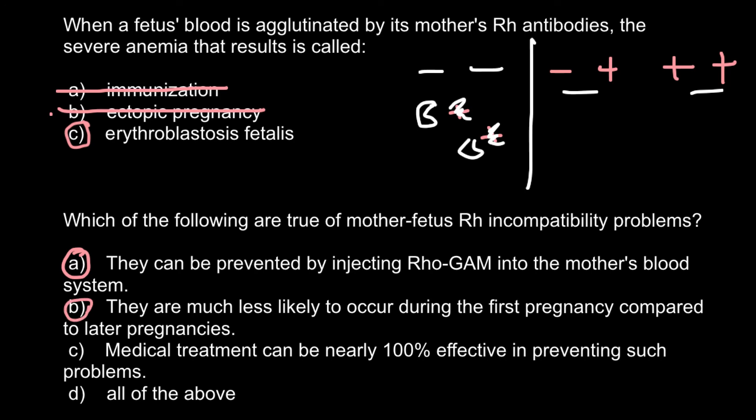Answer C: Medical treatment can be nearly 100% effective in preventing such problems. Medical treatment is about 99% effective in preventing such problems, especially taking into account the special immunization programs described. So this is also a correct answer, which means that Answer D — All of the above — is our choice. The correct answer is D.